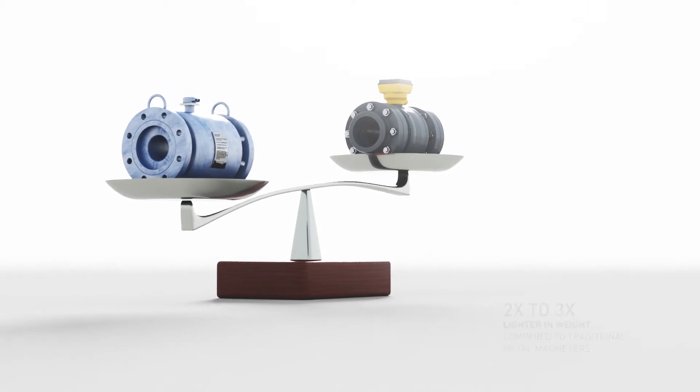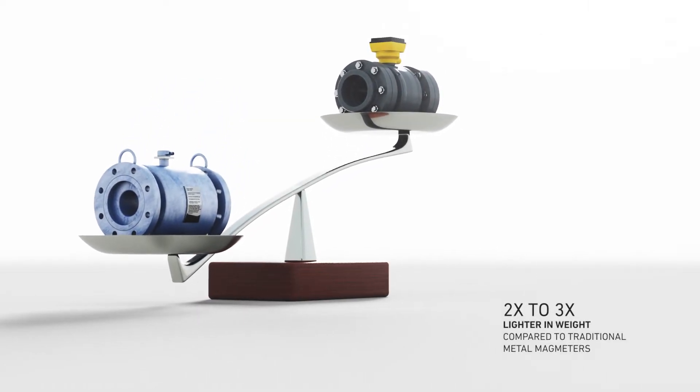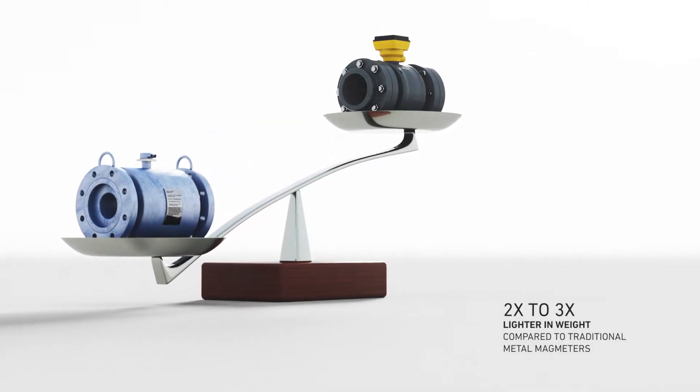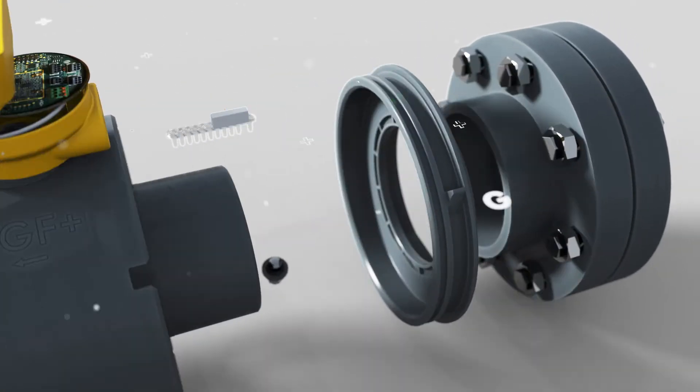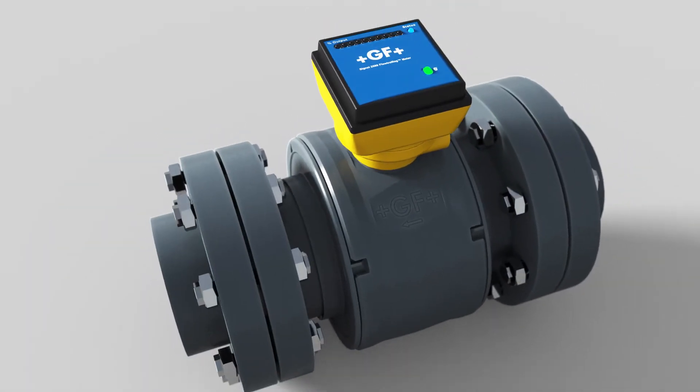The PVC plastic housing is two to three times lighter in weight compared to traditional metal mag meters on the market, making installation ideal for tight piping installations, typically associated with skid designs and final effluent traps to ensure a full pipe.